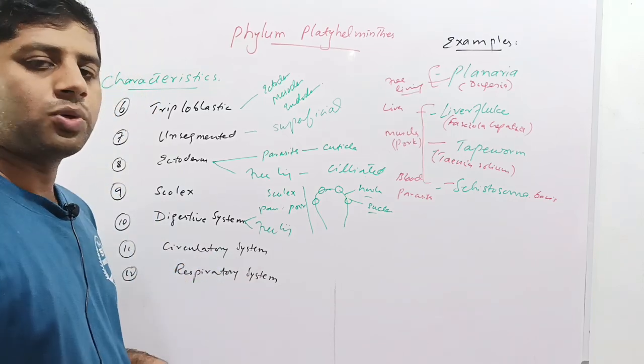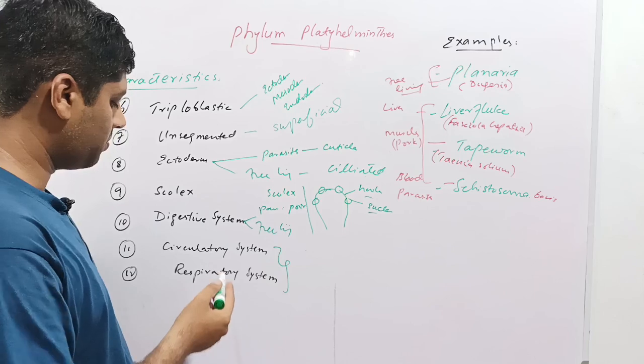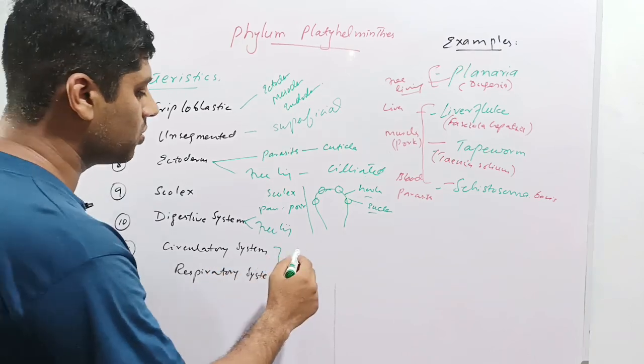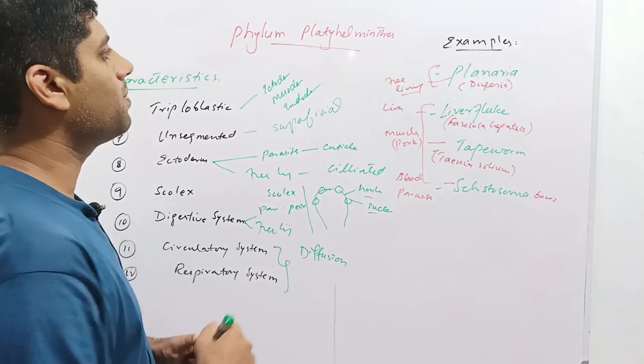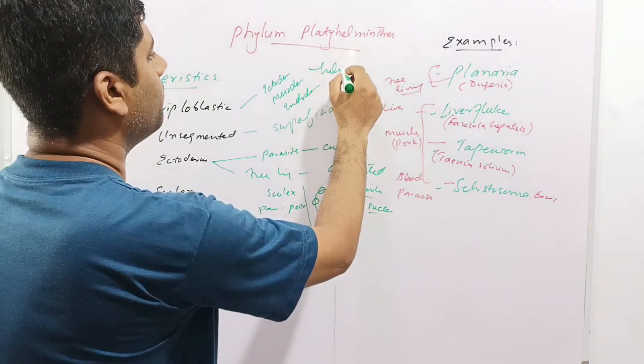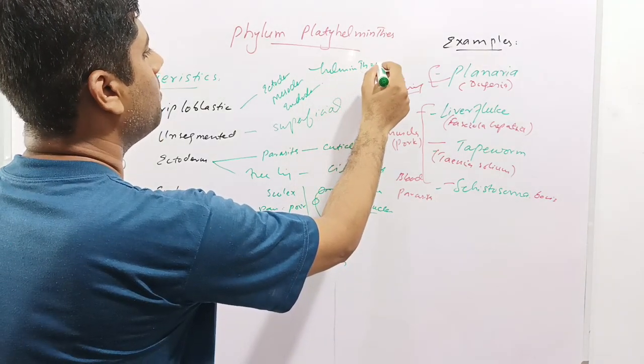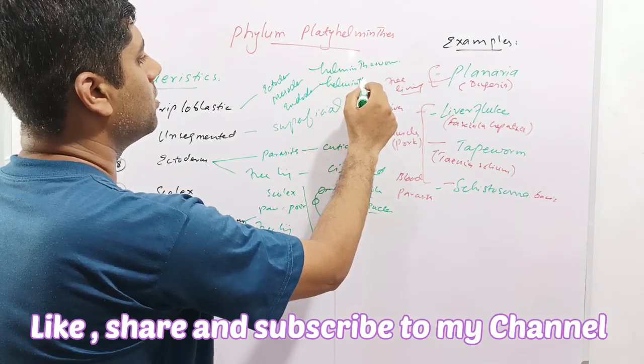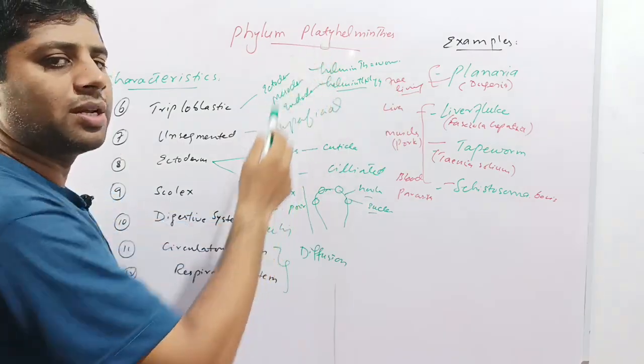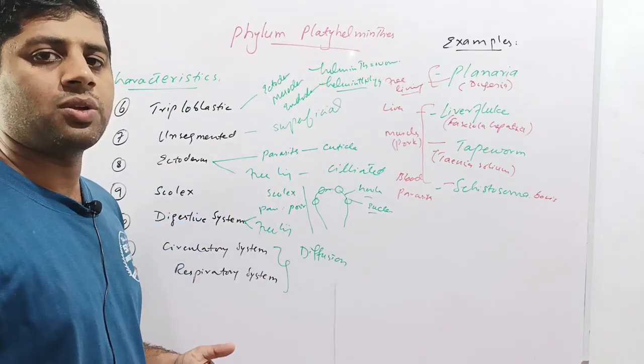Circulatory system and respiratory system are both absent. Therefore, respiration and circulation occur through diffusion. It should be kept in mind that helminth means worm, and the study of worms is called helminthology. So basically, Platyhelminthes belong to the discipline of helminthology.